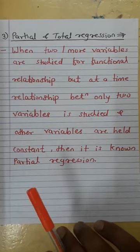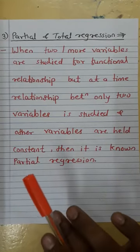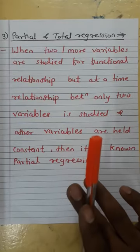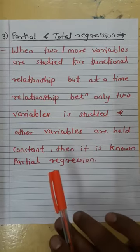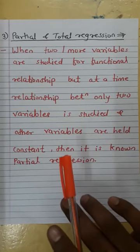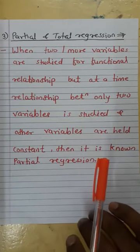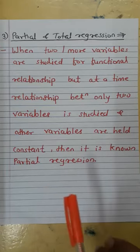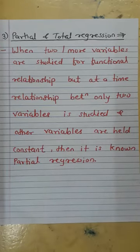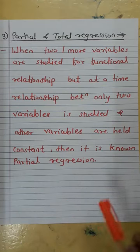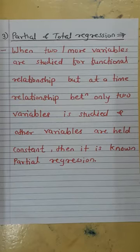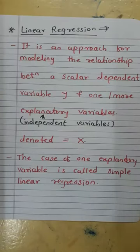The next type is partial and total regression. When two or more variables are studied for a functional relationship but at a time the relationship between only two variables is studied and other variables are held constant, it is known as partial regression. The total regression counts all relationships together, telling us whether the relationship is linear or non-linear.